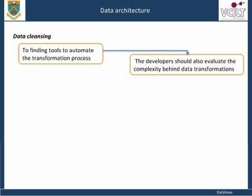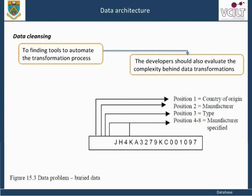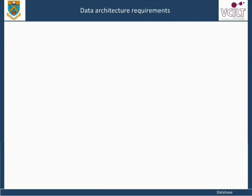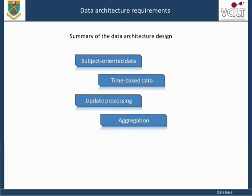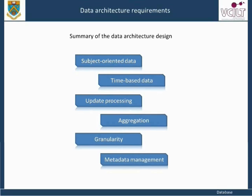Legacy systems often use composite keys to uniquely define data. Although these fields appear as one in a database, they represent multiple pieces of information — this is illustrated by a vehicle identification number that contains many pieces of information. The main data architecture requirements include subject-oriented data, time-based data, update processing, aggregation, granularity, and metadata management.